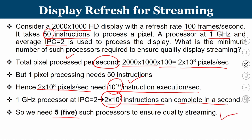We see the requirement from the application side and the capability of one host processor. We require 5 such processors in order to execute 10^10 instructions per second — one processor is not sufficient. The minimum number of processors required to ensure quality display streaming is 5.